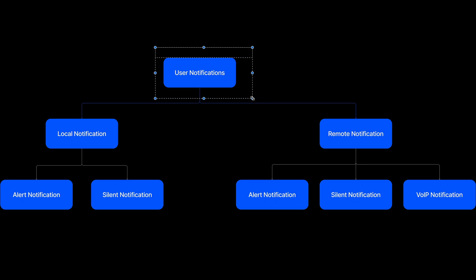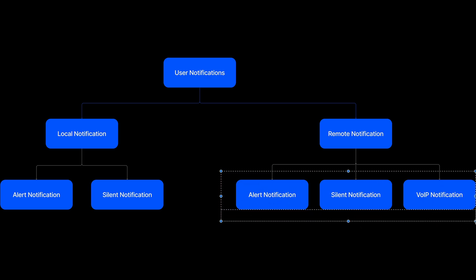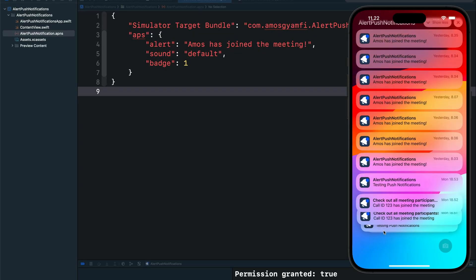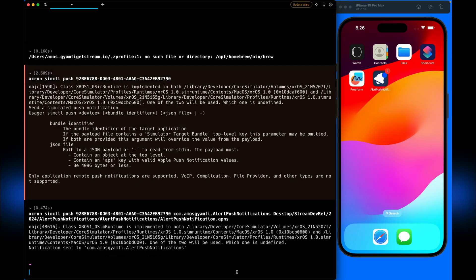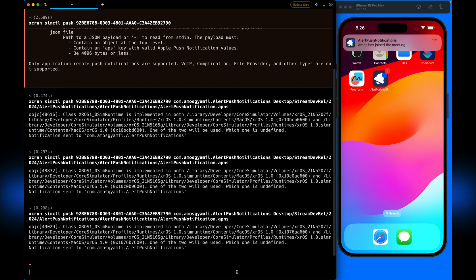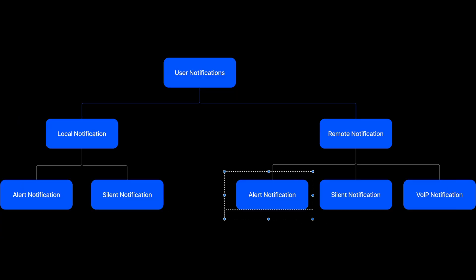Let's look at an overview of user notifications and what we are going to do specifically in this video. User notifications have two forms: local notifications and remote notifications. In this tutorial we are focusing on remote notifications, specifically alert notifications. The main purpose of alert notifications is to inform users about new information they can interact with. For example, in a video conferencing app like Zoom, push notifications can notify participants when someone joins or leaves a meeting. In a live streaming app like Twitch, push notifications inform guests when the stream goes live.